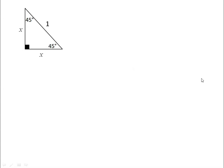So this is the first of the special triangles. It's a right isosceles triangle with a 90 and two 45 degree angles. And because it's isosceles, the two legs, the two non-hypotenuse sides, have the same value. I'll call them both x.